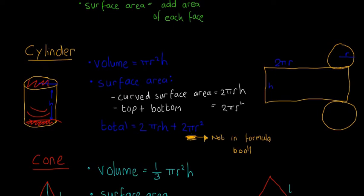The second part — the top and bottom — isn't in the formula book. The formula book only gives you the curved surface area, so you have to remember to include the top and the bottom as well. The net of a cylinder has a rectangular piece for the curved surface area and two circles for the top and bottom. I always think of a can of Coke as the most familiar cylinder shape.